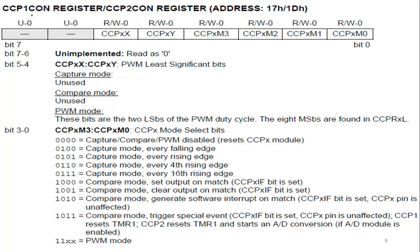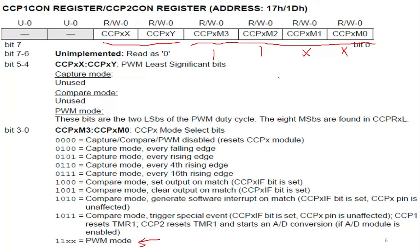The CCPR1 control register is used for configuring the PWM module. It is an 8-bit register, and the lower 4 bits configure the CCP module. To configure it as a PWM module, we have to use the option 11xx — meaning these two bits should be 1, and the lower two bits are don't care. So we set those two upper bits equal to 1. The lower two bits, CCP1X and CCP1Y, are the lower 2 bits of the PWM resolution, and together with the bits in CCPR1L, they determine the full 10-bit resolution of the PWM waveform.